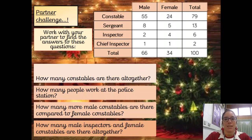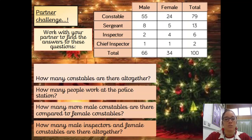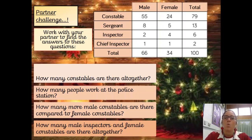How many people work at the police station? Think about which row and column you need to look at. How many more male constables are there compared to female constables? You need to find the male constables and female constables. You've got 55 and you're going to take away 24, giving you 31. So there are 31 more male constables than female constables.